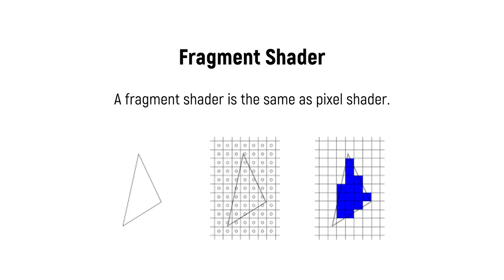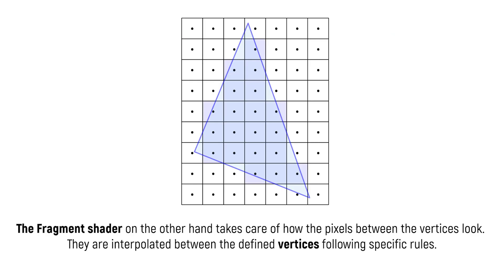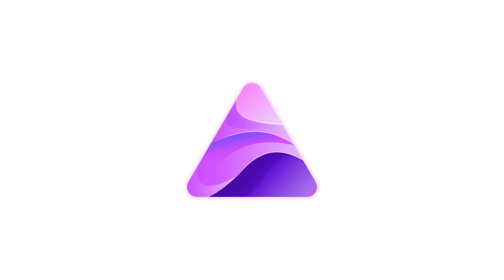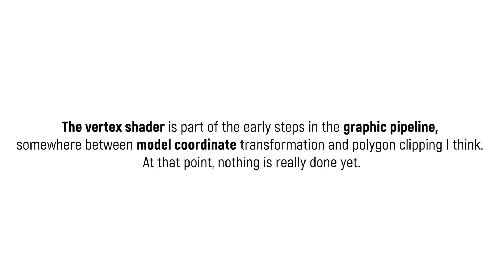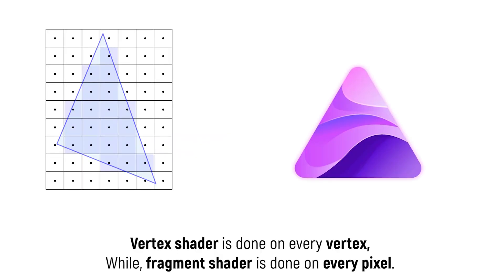A fragment shader is essentially the same as a pixel shader. The vertex shader can manipulate the attributes of vertices, which are the corner points of your polygons. The fragment shader takes care of how the pixels between vertices look — they are interpolated between defined vertices following specific rules. For example, if you want a gradient effect between vertices, you do that in the fragment shader. The vertex shader is part of the early steps in the graphics pipeline, while the fragment shader handles rasterizing — calculating the image and filling in pixels between vertices. In short, the vertex shader runs on every vertex while the fragment shader runs on every pixel.